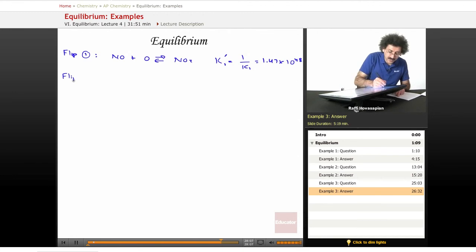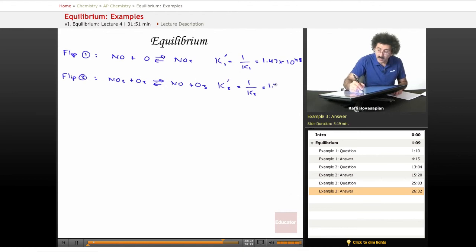I'm also going to flip the second reaction. I'm going to make the reactants the products, the products the reactants. When I do that, I end up with NO2 plus O2 in equilibrium with NO plus O3. This equilibrium constant, again, I flipped it, so I take the reciprocal of that and I get 1.72 times 10 to the 33rd.